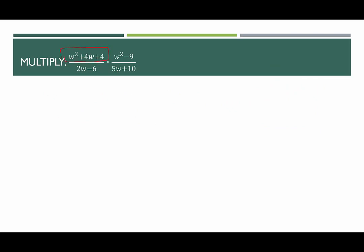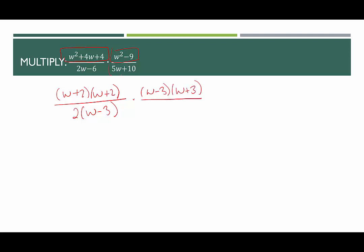Last example: the top left numerator is a perfect square trinomial, written as (w + 2)(w + 2). Below it, 2w − 6 has a GCF of 2, giving 2(w − 3). The top right w² − 9 is a difference of squares factoring into (w − 3)(w + 3). The bottom right has a GCF of 5, giving 5(w + 2). Simplifying: (w + 2) cancels, (w − 3) cancels, leaving (w + 2)(w + 3) in the numerator and 2 times 5 = 10 in the denominator.